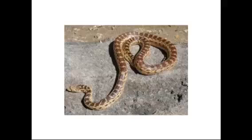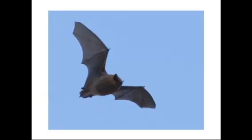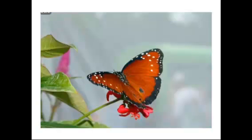But did you know that animals can do things that people cannot do? Like a snake — a snake doesn't have legs like us, so it slithers. And a bat can fly. Here's a butterfly — it can also fly. That's something that we cannot do.